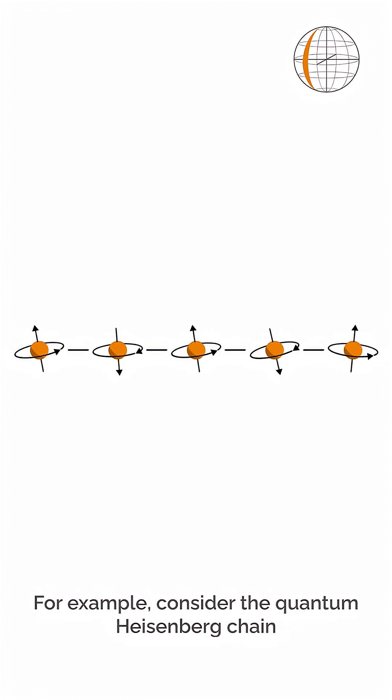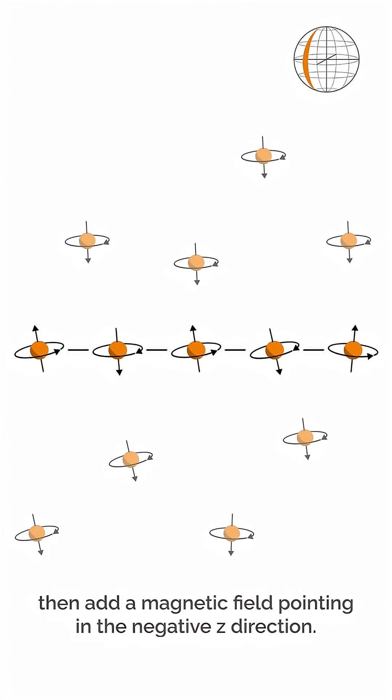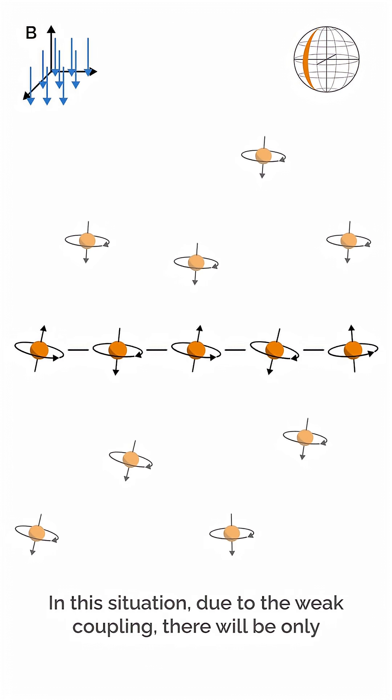For example, consider the quantum Heisenberg chain surrounded by a large number of spins that weakly couple to all the other spins. Then, add a magnetic field pointing in the negative Z direction.